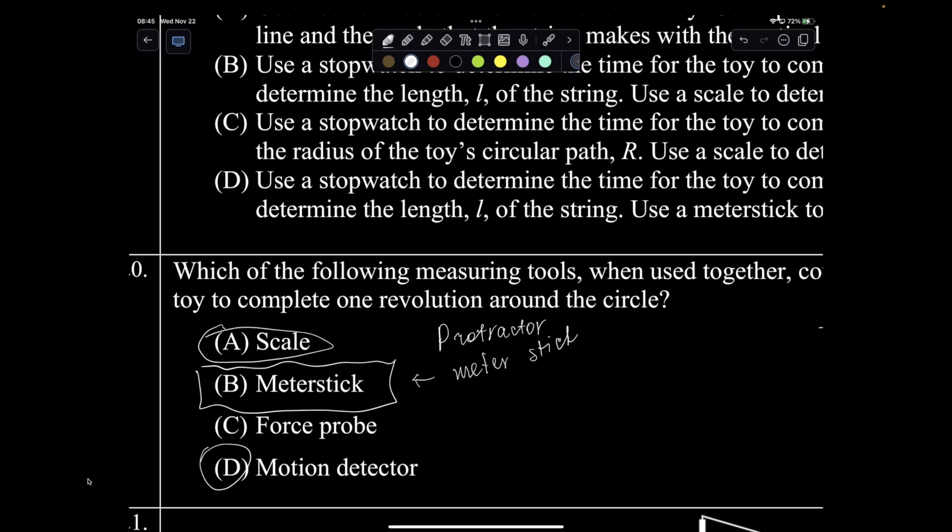Some of you chose motion detector. Motion detector measures the distance, so if you put motion detector here, you can technically figure out that it will be a very jagged position graph, or it might not even be in the scope for your motion detector. So motion detector is not.